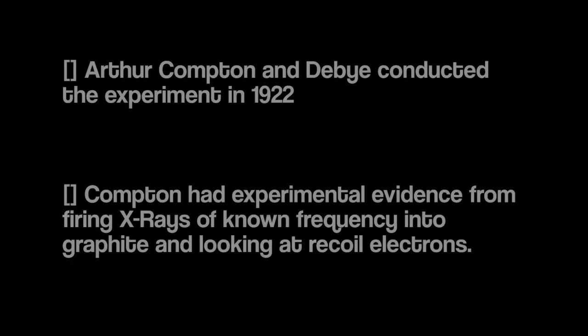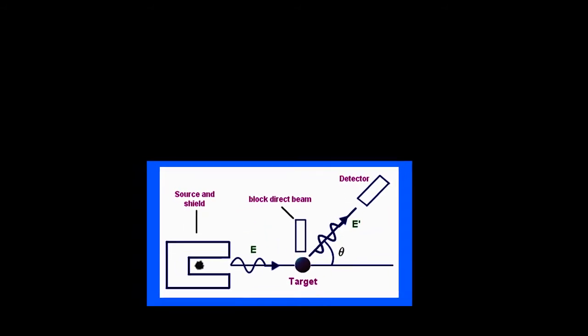Then Compton came along and proposed that Einstein was right, the light beam is made of particles. Arthur Compton and Davy both provided in 1923 a very simple mathematical framework for the momentum of those photons, with Compton having experimental evidence from firing X-rays of unknown frequency into graphite and looking at recoiled electrons. The experimental demonstration of the Compton effect is shown in the figure given below.